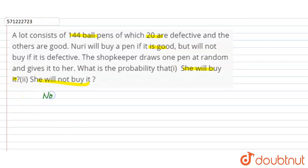First, total number of possible outcomes are total number of ball pens, that is equal to 144. Now, number of defective pens are 20.